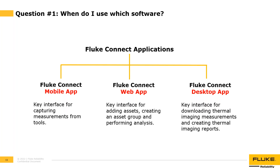Depending on the type of tool, you will use either Bluetooth or Wi-Fi to connect your phone to the Fluke tool. Clamp meters like the 368 FC, 369 FC, and 902 FC; digital multimeters like the 279 FC; and installation testers like the 1664 FC and 1587 FC all use Bluetooth. In fact, most of the 80 supported Fluke Connect tools use Bluetooth. Exceptions include power loggers like the 1732 FC and 1742 FC, and thermal imagers, which use Wi-Fi.